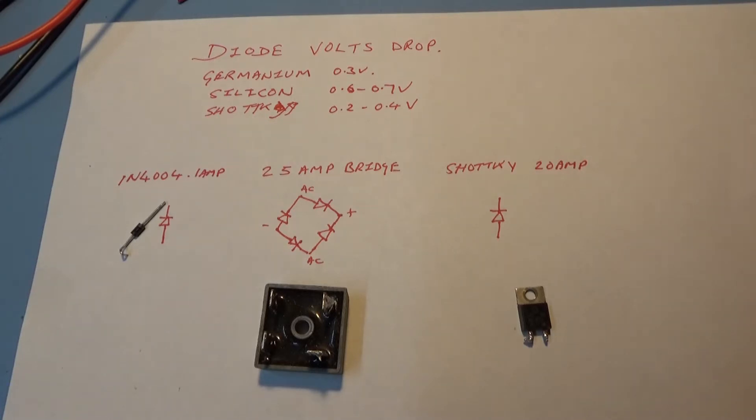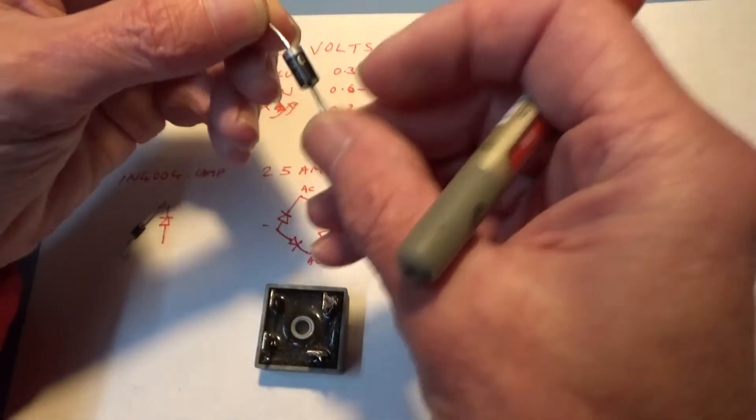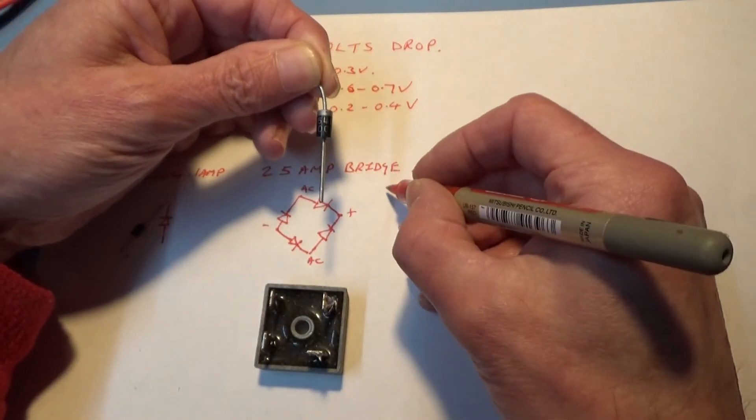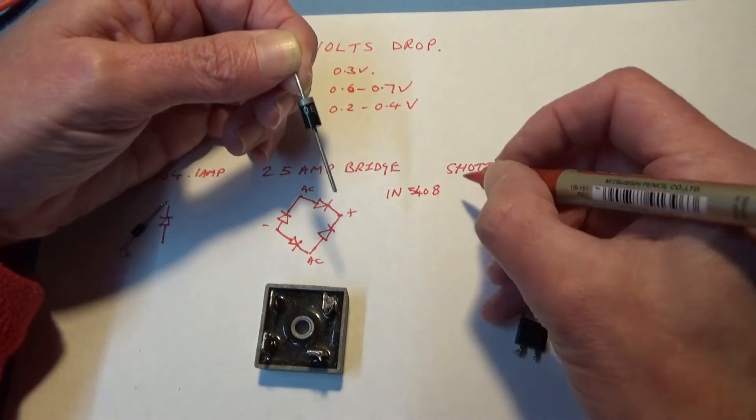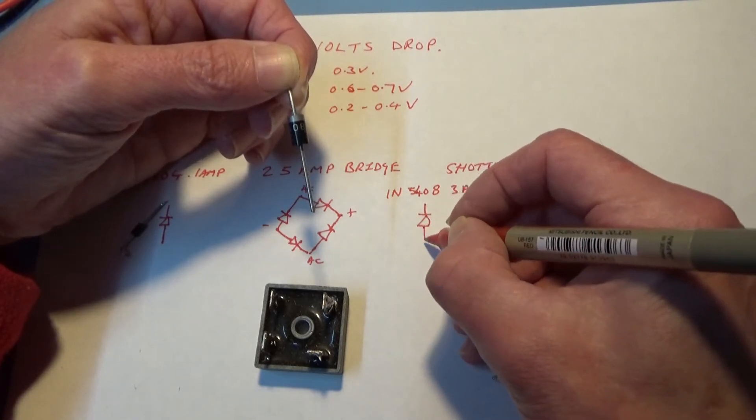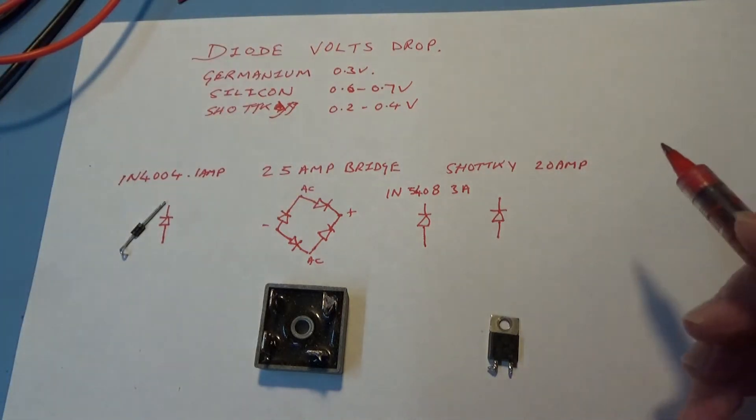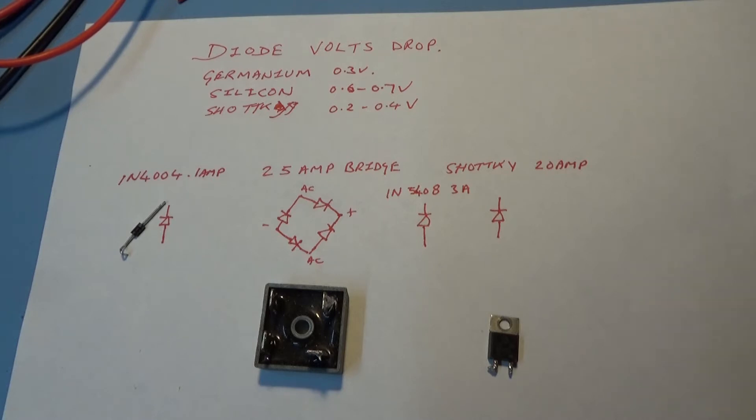What I'm going to do today is use some power diodes. I've got 1N4004, 1N5408 which gets 3 amps but might be 5 amps, a 25 amp bridge rectifier, and a Schottky diode. I want to test these diodes at various currents to show you the forward voltage drop across them. Let me rig up my test instruments, first of all just test with the multimeter on diode test mode.